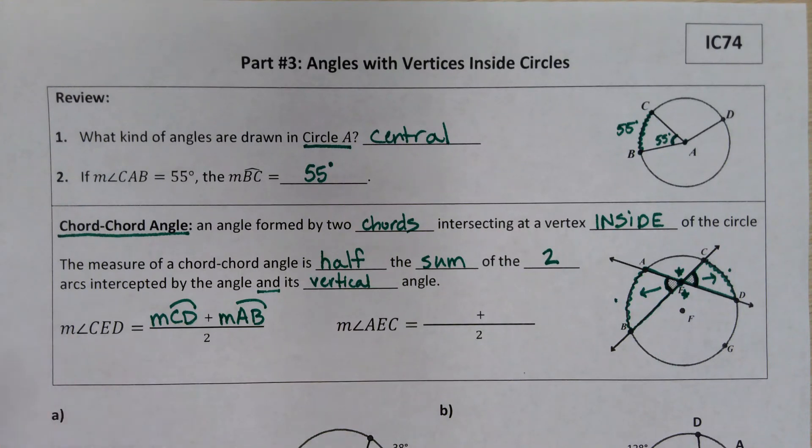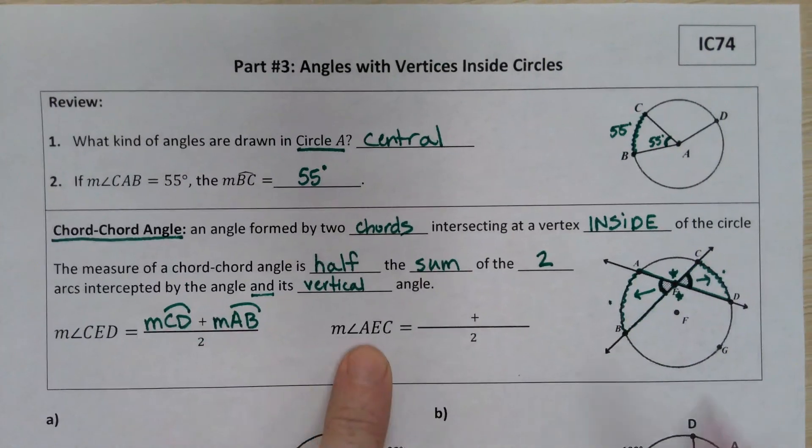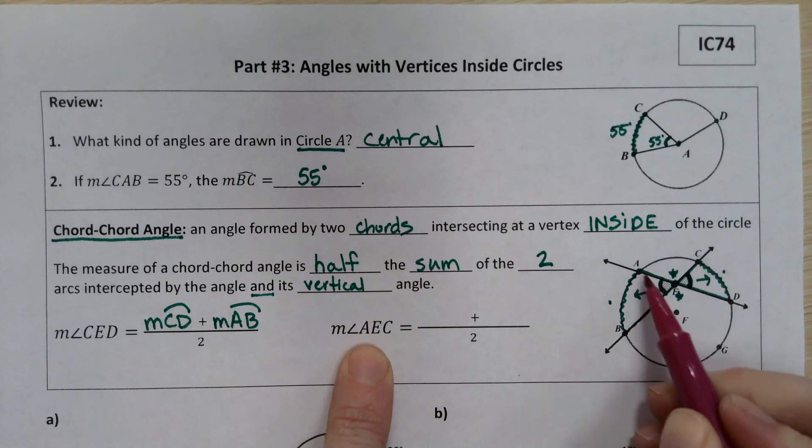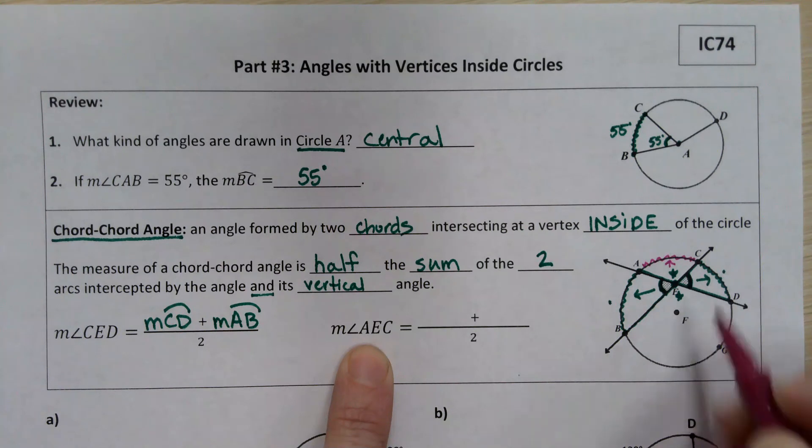If we were looking instead for the measure of angle AEC, that's this top angle that I put a star in earlier. So we would travel out to its intercepted arc, then we would travel out to its vertical angle's intercepted arc, and those are the two arcs.